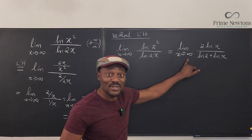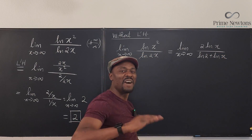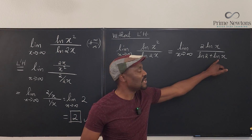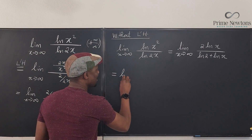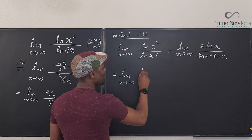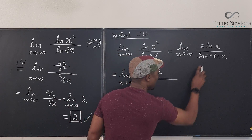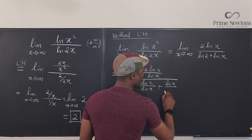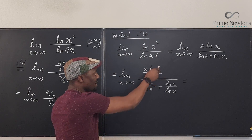This helps because as x goes to infinity, both terms go to infinity. In that situation, divide everything by the highest power of x you have in the denominator. Here, the only x in the denominator is ln(x), so divide everything by ln(x). The numerator becomes 2 ln(x) over ln(x). The denominator becomes ln(2) over ln(x) plus ln(x) over ln(x).